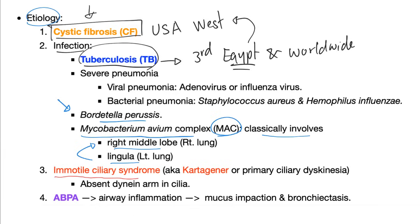Next, immotile cilia syndrome — it has three names: immotile cilia syndrome, Kartagener syndrome, and primary ciliary dyskinesia. In brief, your cilia are not working. When cilia don't work, your mucociliary escalator — the pseudostratified columnar epithelium — cannot push debris out or clear the sputum. This leads to stagnation, bacterial overgrowth, and ultimately bronchiectasis.